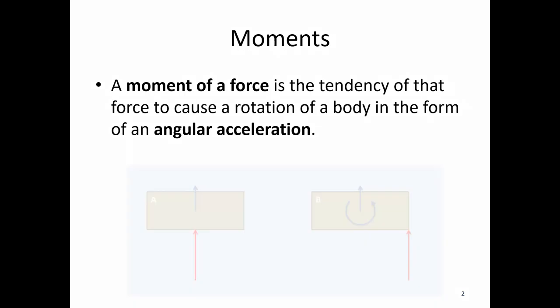To illustrate this we're going to talk about two boxes, box A and box B. Both of them are sitting on an icy surface, so we're going to assume no friction. Box A, I'm going to push in the middle of it. So if I push in the middle of the box, it would just tend to slide forward, accelerate in linear fashion.